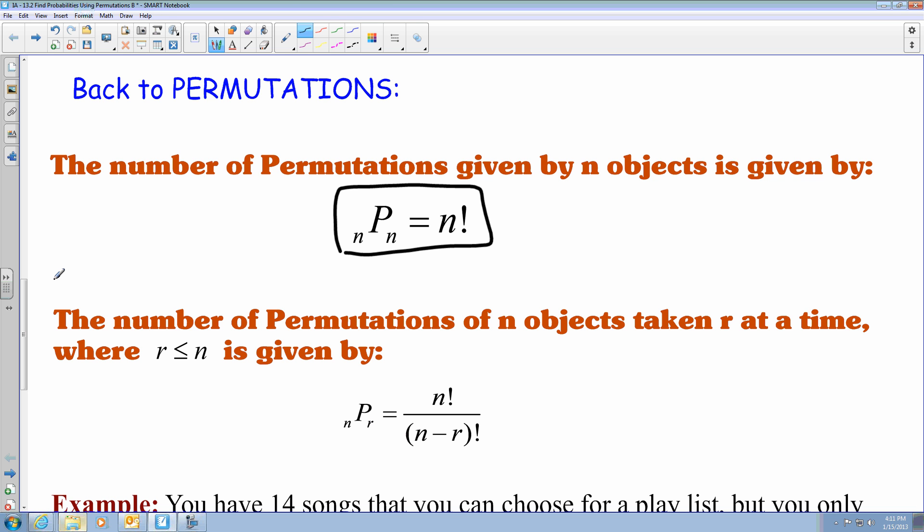But if you were to have a number of permutations of n objects and you wanted to take them at r at a time, where r is less than or equal to n, you can write it as an equation looking like this, where it's n factorial divided by n minus r factorial.